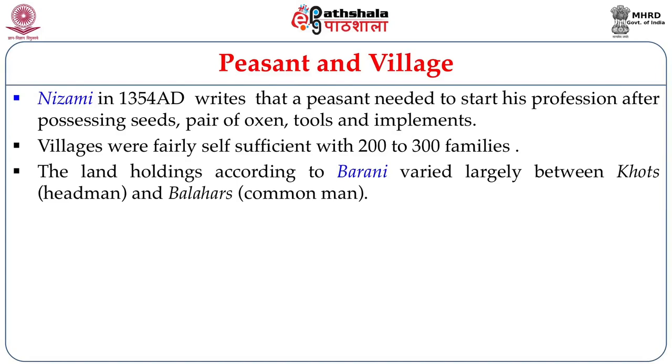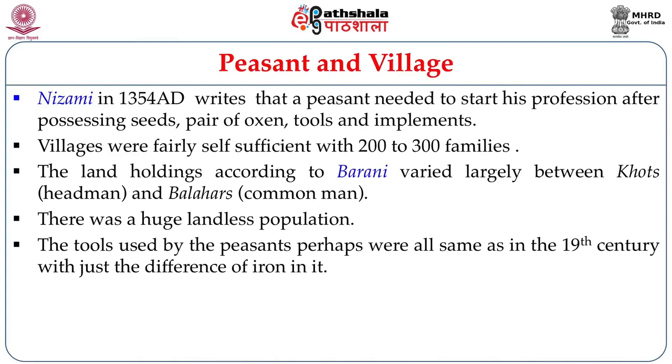Land holdings differed from peasant to peasant. The upper echelon of the peasantry — the khots and mukaddams, who were the headmen — had large holdings, while the balahars or common peasants had smaller holdings. There was also a large landless population due to class-based society, where caste discrimination did not allow menial classes to acquire land, so they mostly worked on others' land. The tools used were much the same as in the 19th century, except that the use of iron was less during the medieval period, making implements somewhat softer.